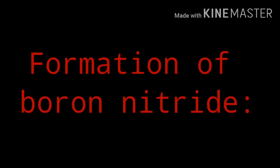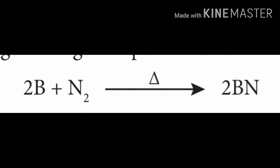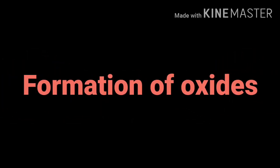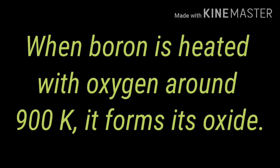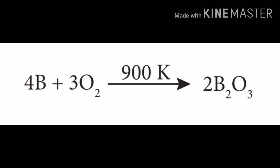The next reaction of boron is formation of boron nitride. When boron burns with dinitrogen at high temperatures, it forms boron nitride. Next, when boron is heated with oxygen at around 900 Kelvin, it forms its oxide. The reaction is: boron plus oxygen at 900 Kelvin gives boron oxide (B2O3).